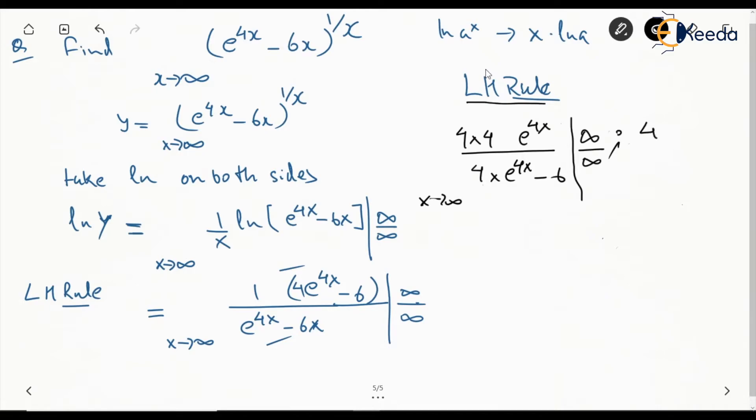So this numerator becomes 4 times 4 and this denominator becomes 4 minus 6 times e to the power minus 4x for x tends to infinity. Now you can see these are all constant values and e to the power minus 4x will become 0 when x tends to infinity.